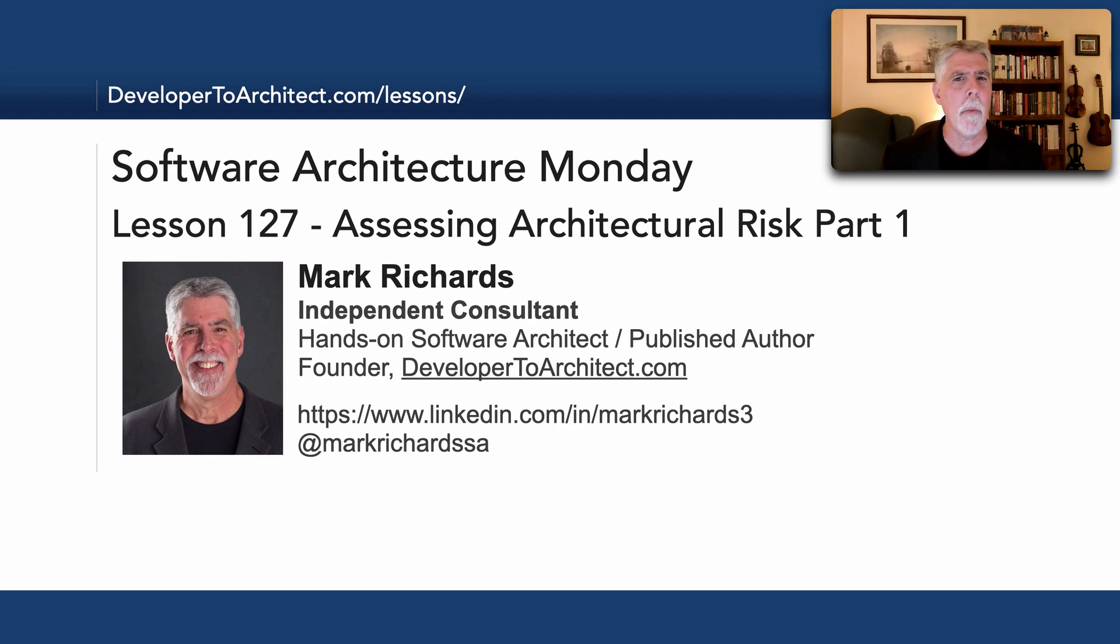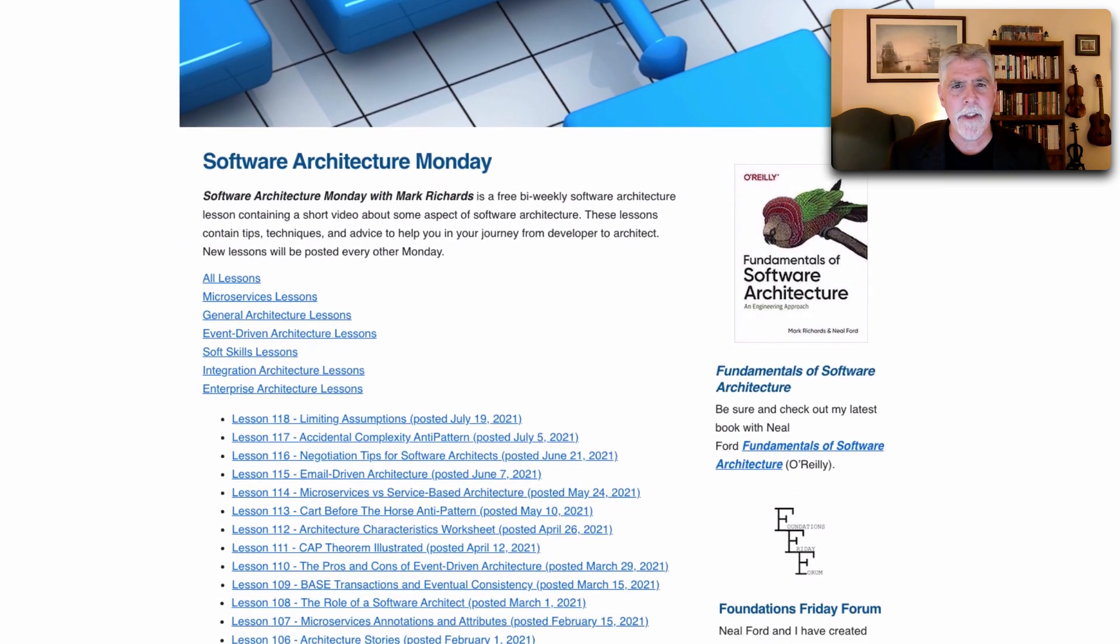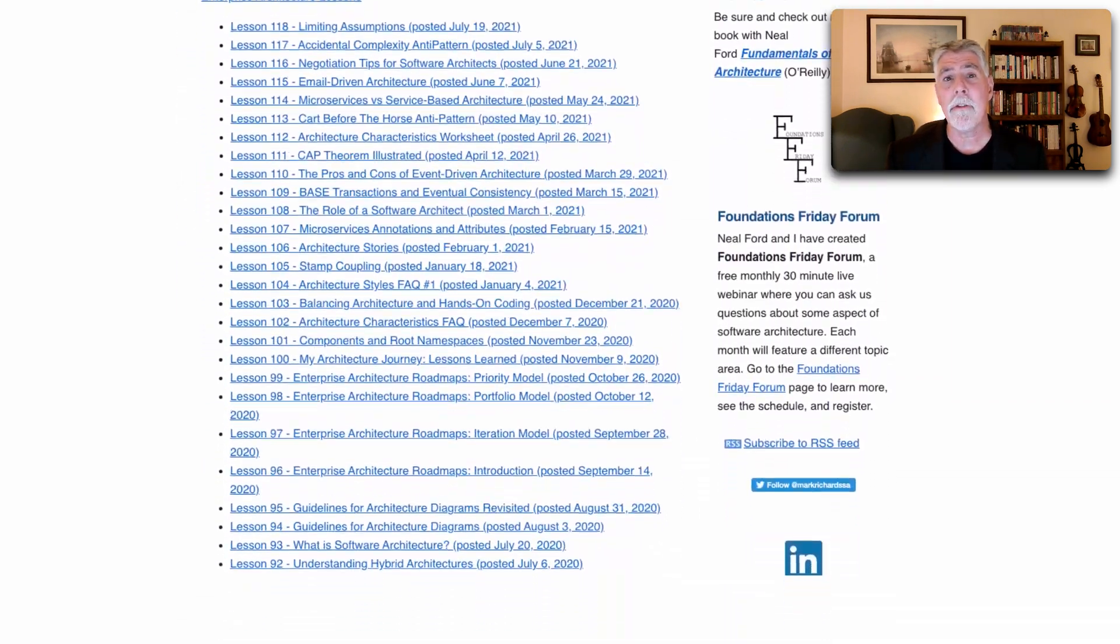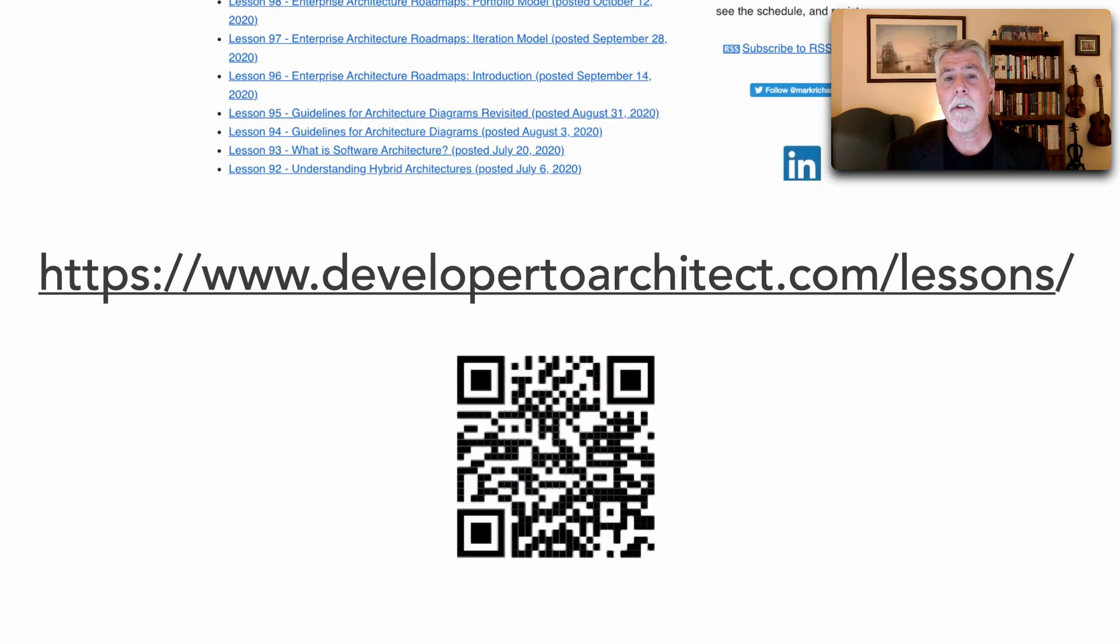Now this is going to be part one of a multi-part lesson on various aspects of architectural risk. You can find all of my lessons in a catalog as well as a description and even view them through my website at developer2architect.com/lessons and this is where Software Architecture Monday is actually housed. You can also, of course, see those on YouTube as well.